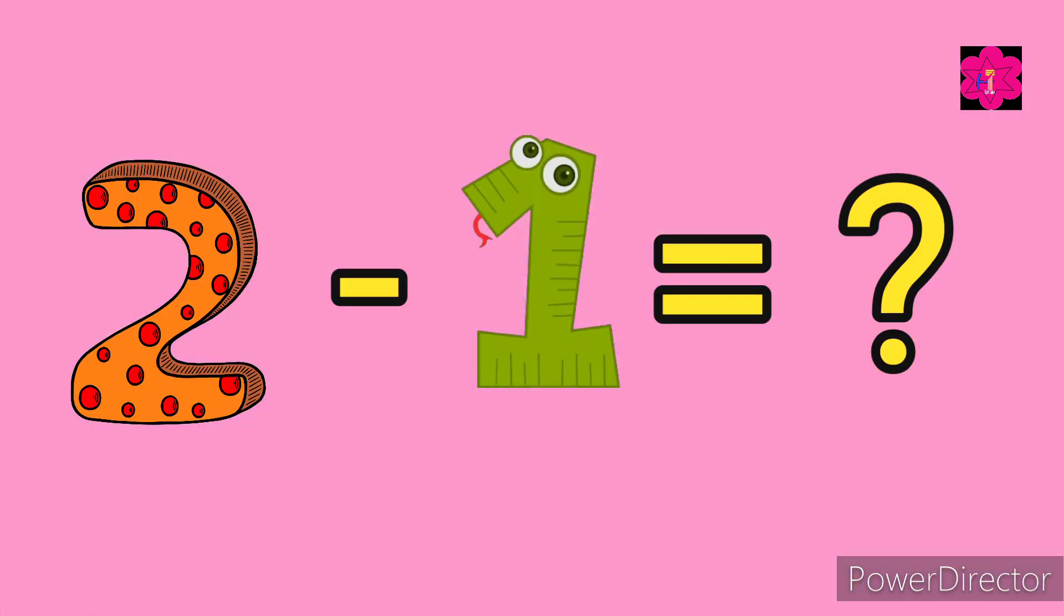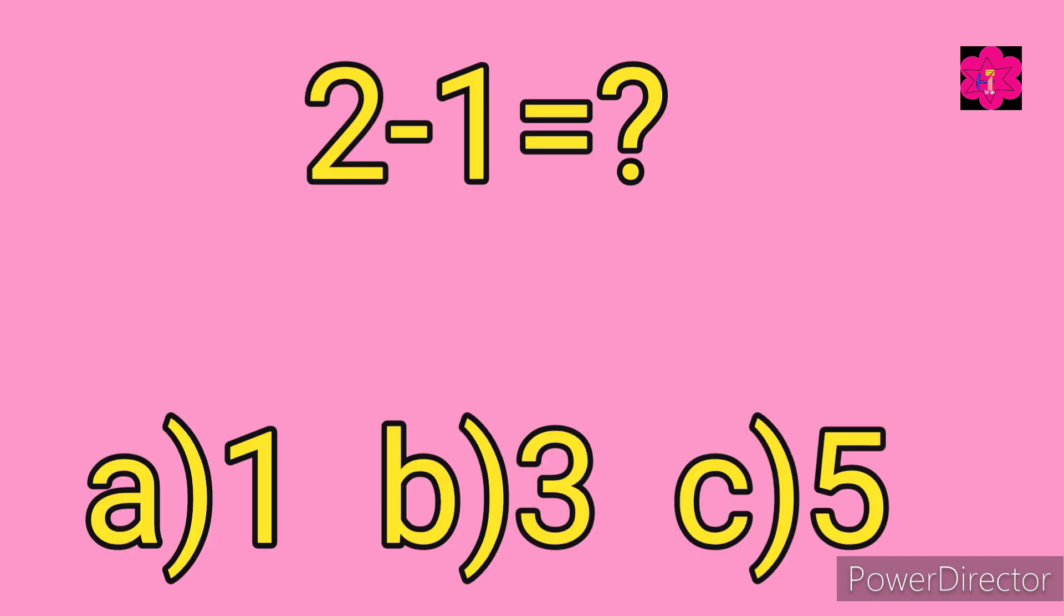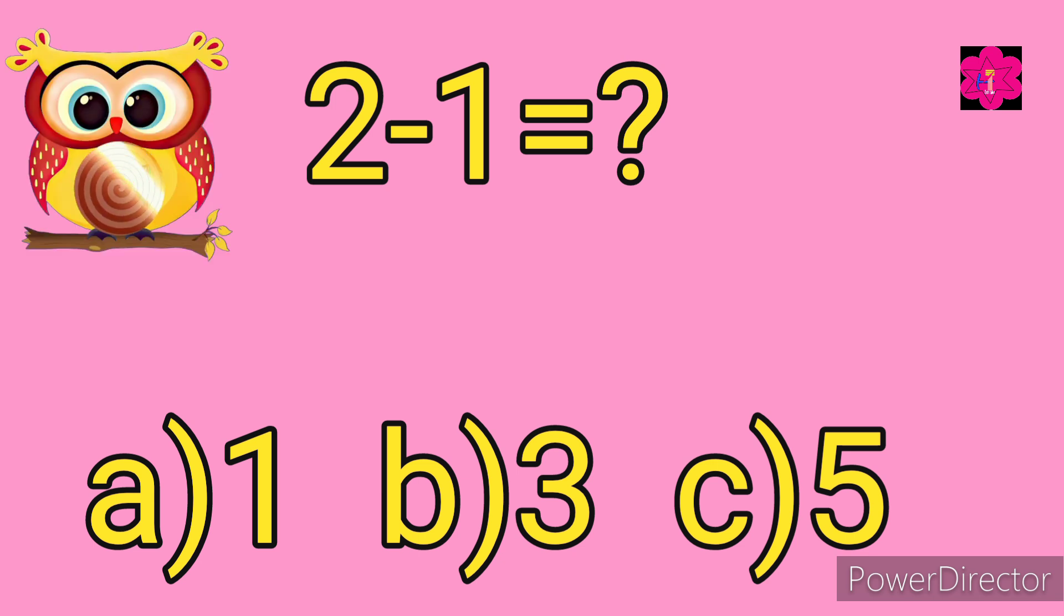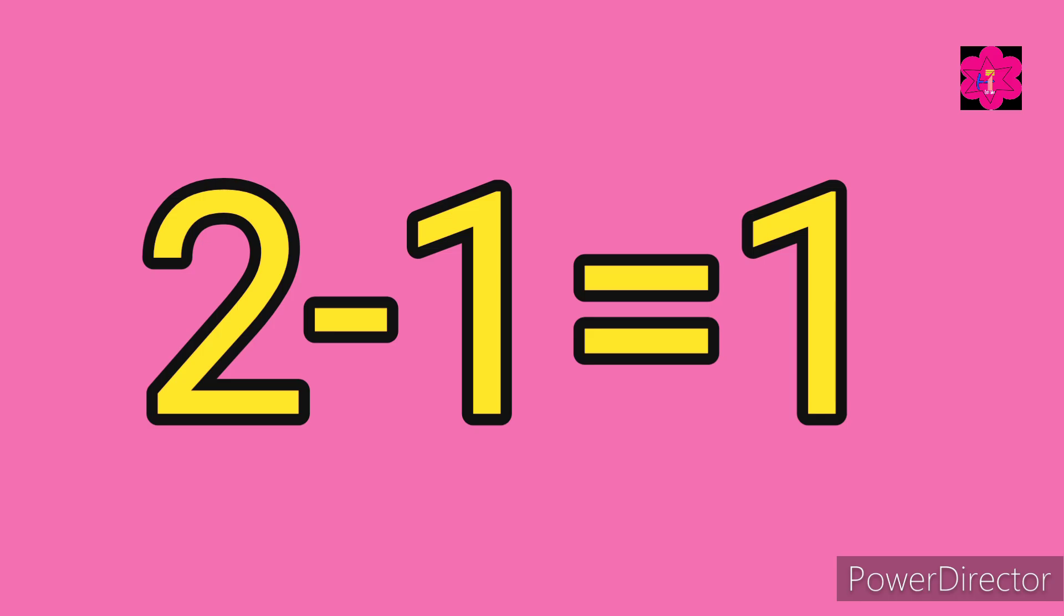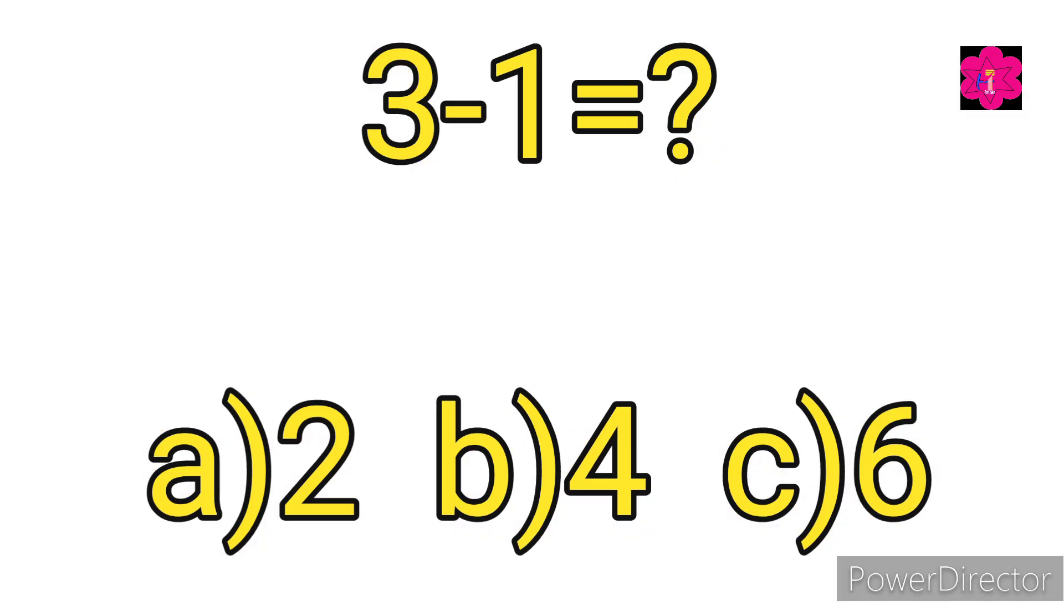Your options are a) 1, b) 3, and c) 5. Yes, correct answer is a) 1. 2 minus 1 is equal to 1. 3 minus 1 is equal to? Your options are a) 2, b) 4, and c) 6.